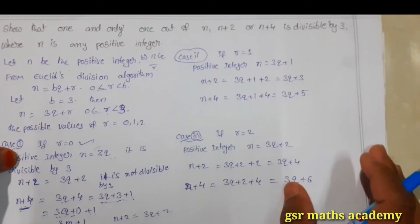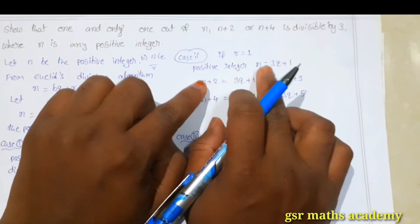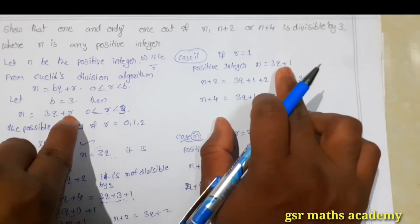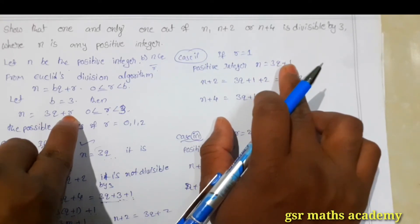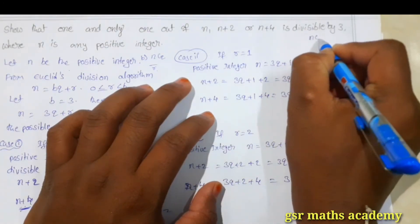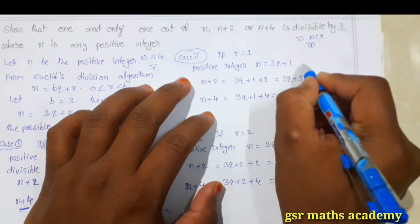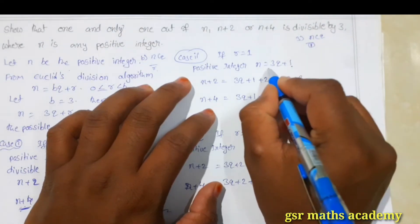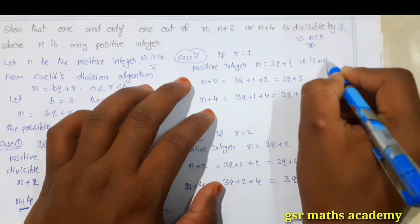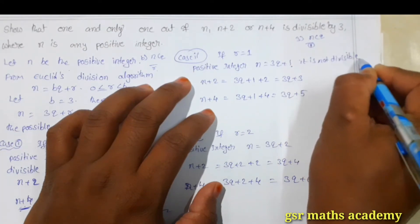Now, if you take r is equal to 1, then positive integer n becomes 3q plus 1. This is also not divisible by 3, because on dividing n by 3, we get quotient q and remainder 1. As we got remainder 1, then it is not divisible by 3.